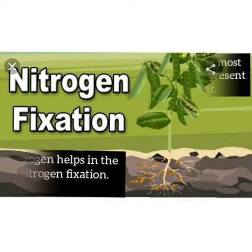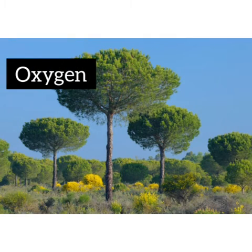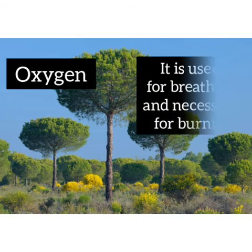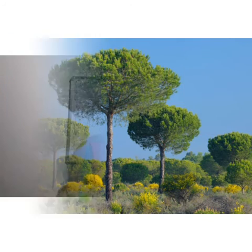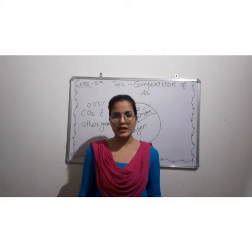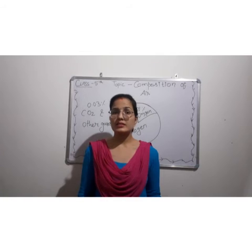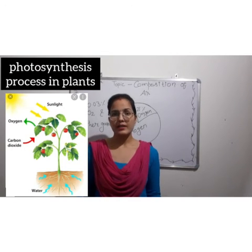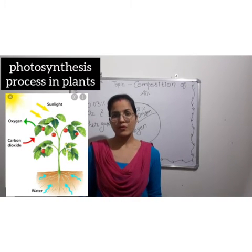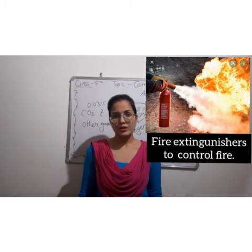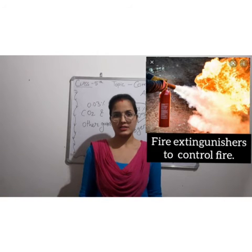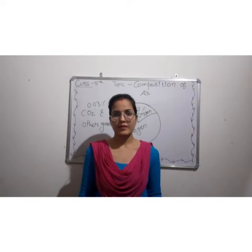Now, oxygen. Oxygen is necessary for burning. Carbon dioxide is used by plants for the photosynthesis process. Carbon dioxide is also used in fire extinguishers.